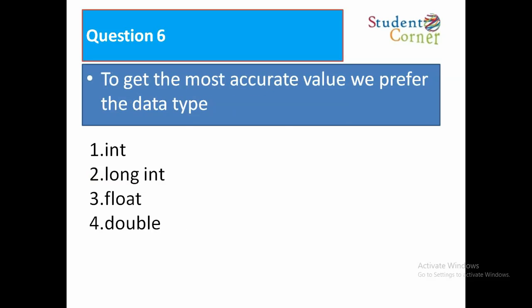Question 6: To get the most accurate value, we prefer which data type? Options: 1. int, 2. long int, 3. float, 4. double. Answer: double. The most accurate data type is double because it can handle large numbers and decimal points with very high precision.